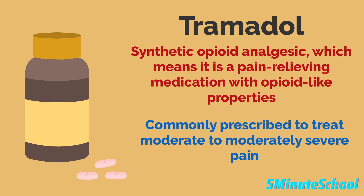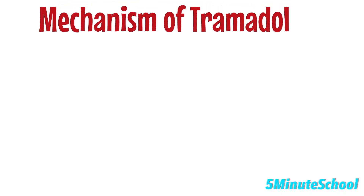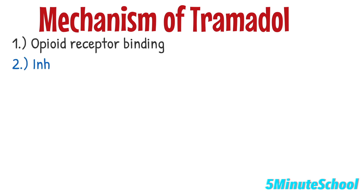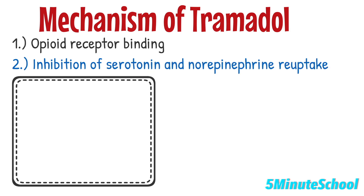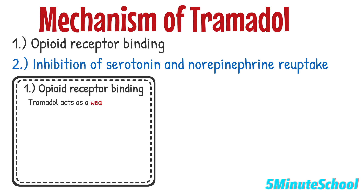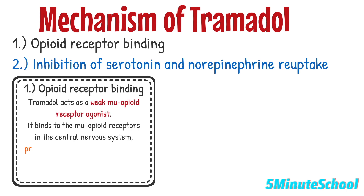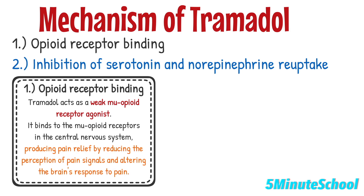Tramadol's analgesic effects are mainly attributed to its actions on two mechanisms: opioid receptor binding and the inhibition of serotonin and norepinephrine reuptake. In terms of opioid receptor binding, tramadol acts as a weak MU opioid receptor agonist, binding to the MU opioid receptor in the central nervous system, producing pain relief by reducing the perception of pain signals and altering the brain's response to pain.